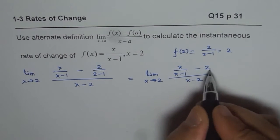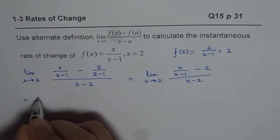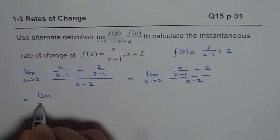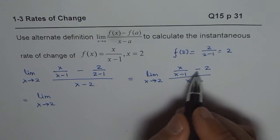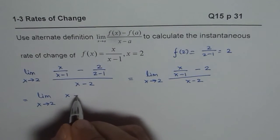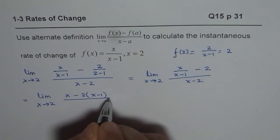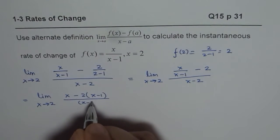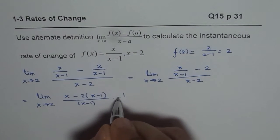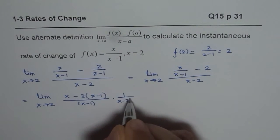Now we can take common denominator and write this as limit x approaches 2. So, cross multiply, so we get x minus 2 times x minus 1 divided by x minus 1 and we have here times 1 over x minus 2.